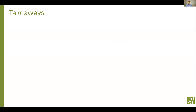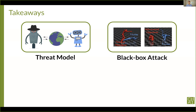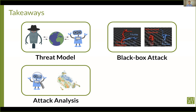To recap, there are four key takeaways: First, real-world attacks against RL systems will come from malicious agents acting in a shared environment, so we should study attacks under a multi-agent threat model. Second, attacks under this more challenging threat model are possible — highly capable policies can fail in the presence of adversarial agents. Third, adversarial policies win by creating unusual observations for the victim. Finally, adversarial training shows promise as a defense method.